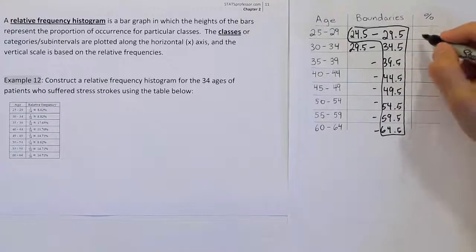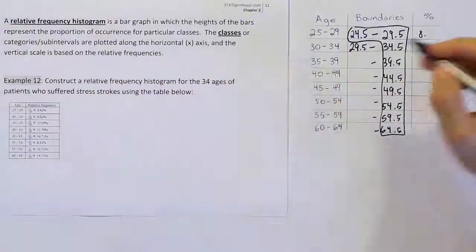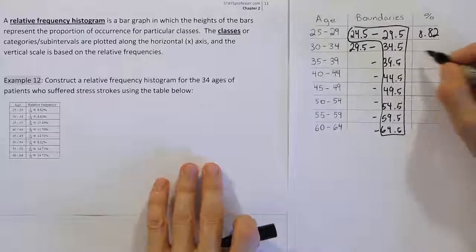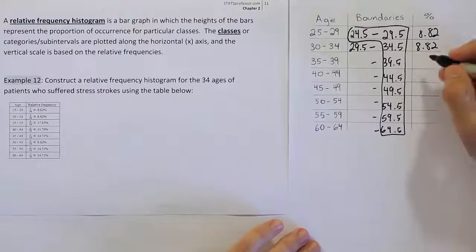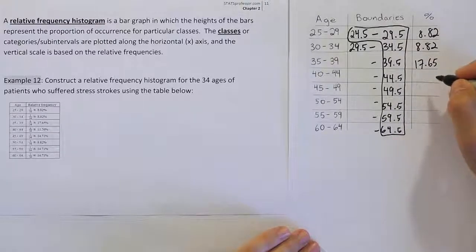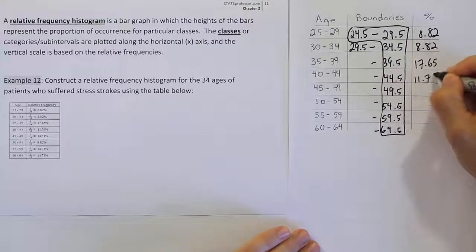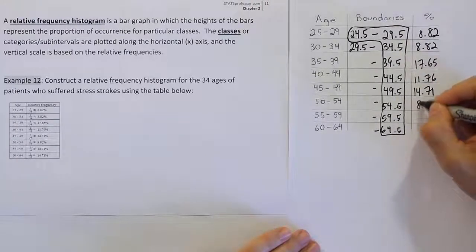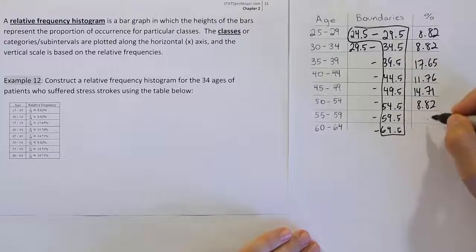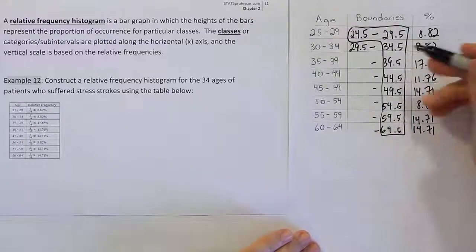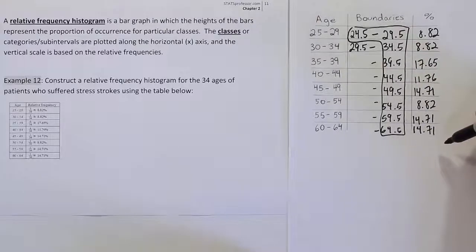I'm just going to fill in the percents here real quick. The percents that were given to us in this table are 8.82%, then another 8.82, then 17.65, then 11.76, then 14.71, 8.82 again, and two 14.71s left after that. So those are the percentages that were given to us. Let's take these boundaries and these percents and go ahead and do our drawing now.